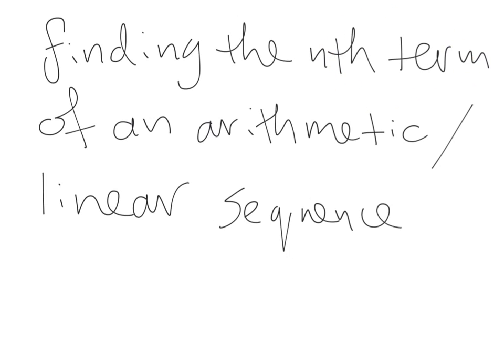Arithmetic or linear basically mean the same thing — the sequence has the same first difference each time; the first difference is constant. A quadratic sequence, however, is when the second difference is constant.